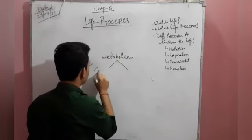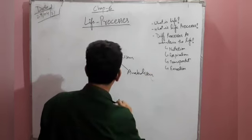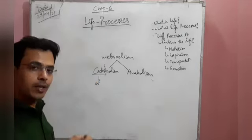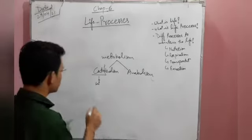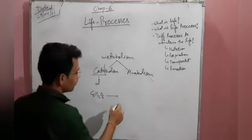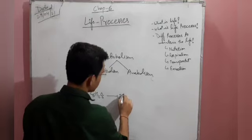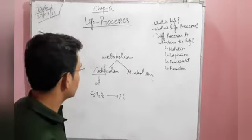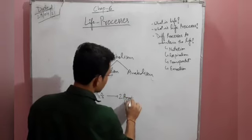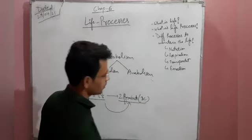Catabolism refers to breakdown reactions — reactions in which something breaks down. For example, the glucose molecule C6H12O6 when it breaks down converts into two molecules of pyruvate. Pyruvate is a three-carbon molecule. So one glucose molecule breaking into two pyruvate molecules is called a catabolic reaction.